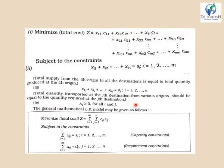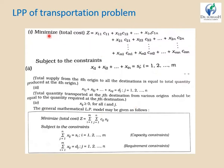Next, we write the Transportation Problem as a Linear Programming Problem. As discussed, it is a special case of LPP. The first step is to write the objective function, which is to minimize the total cost of transportation, denoted by Z. In general form, this is written as: Minimize Z = x11·c11 + x12·c12 + ... and so on.